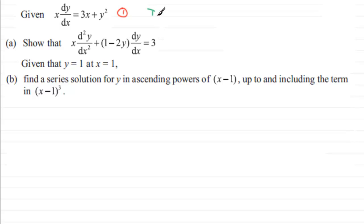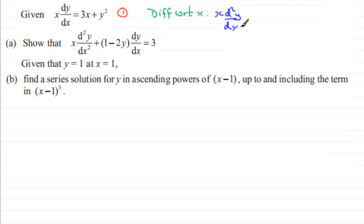Differentiating equation 1 with respect to x: for the left-hand side we need to use the product rule. We take x and multiply it by the differential of dy/dx with respect to x, giving d²y/dx². Then we add the derivative of x, which is 1, multiplied by dy/dx.